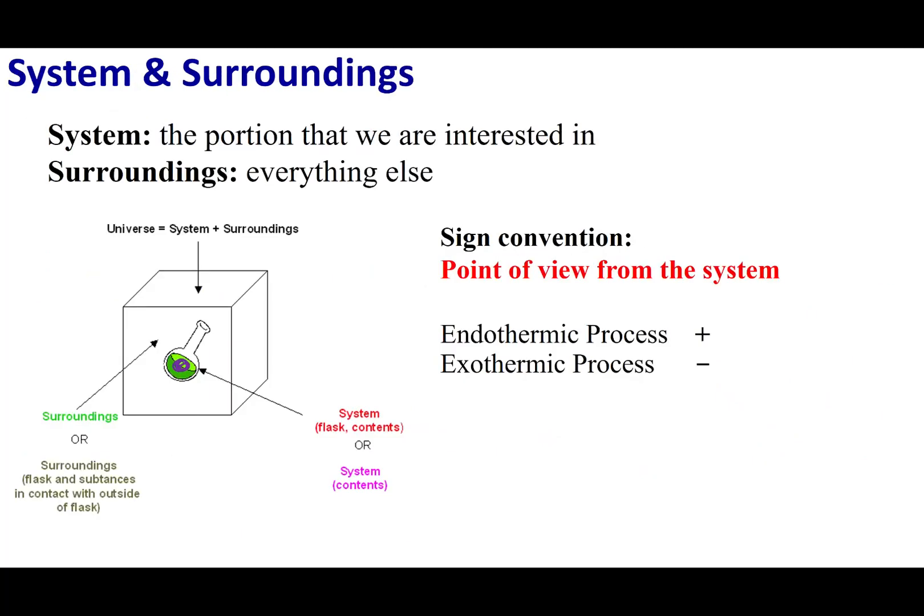Now we should talk about some sign conventions. As chemists, we are going to take the point of view of the system. What that means is, if the system is gaining energy, such as an endothermic process, where energy is flowing into the system, we're going to consider the sign of energy to be positive. If it's an exothermic process, where energy is flowing out of my system, we are going to put a negative sign when we describe energy.